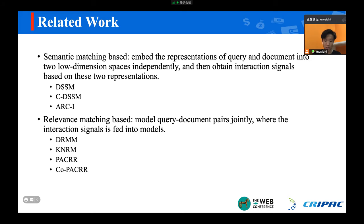Specifically, DRMM utilizes MLP to model the interaction signal. KNRM uses a kernel function. PACRR and Co-PACRR both employ CNN. Though they have achieved promising results, we argue that the hierarchical relationship has not been mined thoroughly.